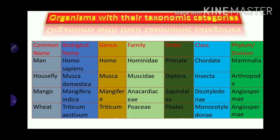Wheat example: Triticum is the genus and aestivum is the species. Family Poaceae, order Poales, class Monocotyledoneae, and phylum Angiospermae.